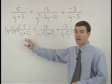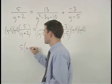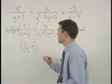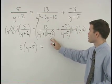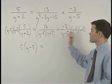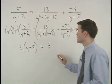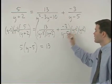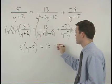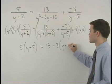On the left the y plus two's cancel so we have five times parentheses y minus five. On the right in the first fraction the denominator cancels out entirely so we have thirteen and in the second fraction the y minus fives cancel so we have minus three times parentheses y plus two.